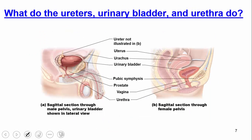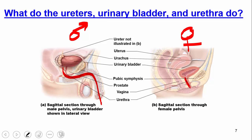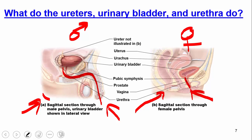The ureters, urinary bladder, and urethra function to eliminate urine. An important topic here is the difference between males and females regarding urinary tract infections. The male urethra is much longer than the female urethra, which is one reason females are much more prone to UTIs — bacteria can more easily enter. Additionally, the female urethra and anus are very close in proximity, making it easy for bacteria from feces to enter the female urethra and cause infection.